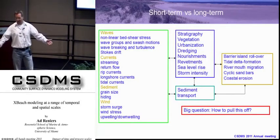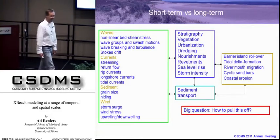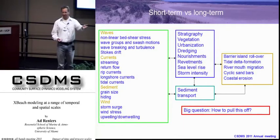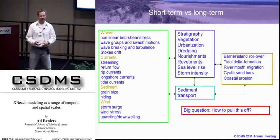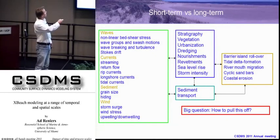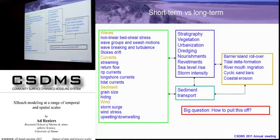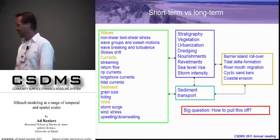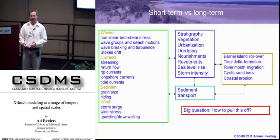This is the big problem that we have. We have all these short-term processes that are responsible for moving the sediment around, related to waves and currents. And of course all of that is a function of the overall configuration, which is determined by stratigraphy, vegetation, urbanization — you can go on and on. And all of that feeds back into the sediment transport and then into the evolution of barrier islands, tidal delta formations, et cetera. So the key question is: how do we resolve this?